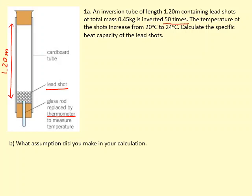In this question you're doing it 50 times. You need to figure out the loss in gravitational potential energy, so you can do mgh for that. The mass is 0.45 times 9.81 times the change in height which is 1.2. But the thing is you're doing it 50 times, so you need to multiply this by 50.